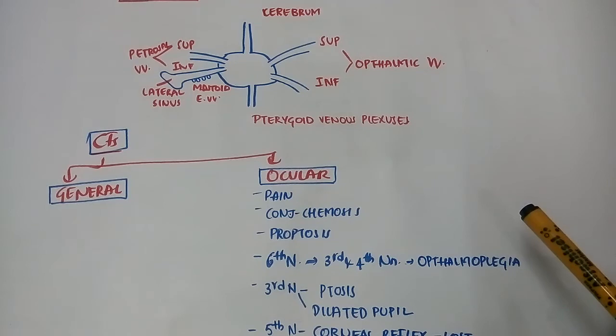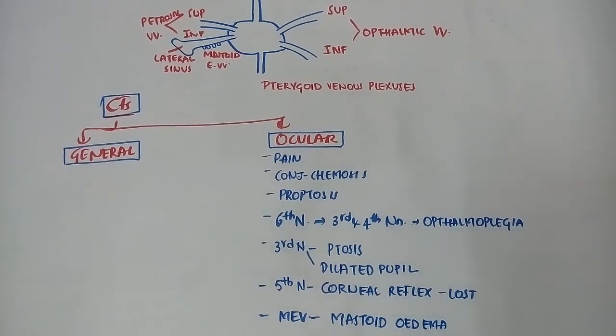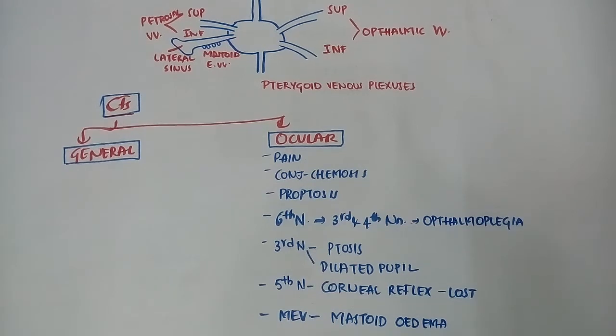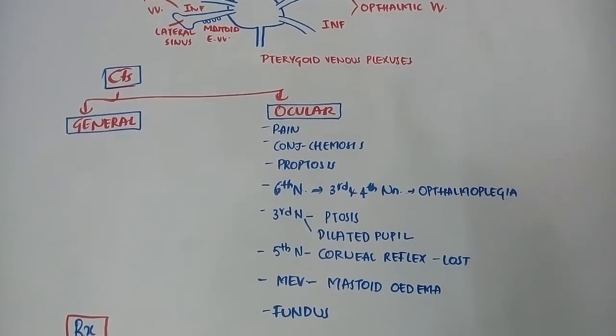Clinical features are general and ocular. General features include high fever, chills and rigor, vomiting, and headache. Ocular features include eye pain, chemosis (conjunctival swelling), and proptosis.